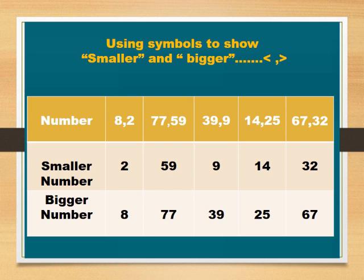Here, we see a chart. In this chart, we write smaller number and bigger number. Numbers 8 and 2: 2 is the smaller number and 8 is the bigger number. 77 and 59: 59 is the smaller number and 77 is the bigger number.